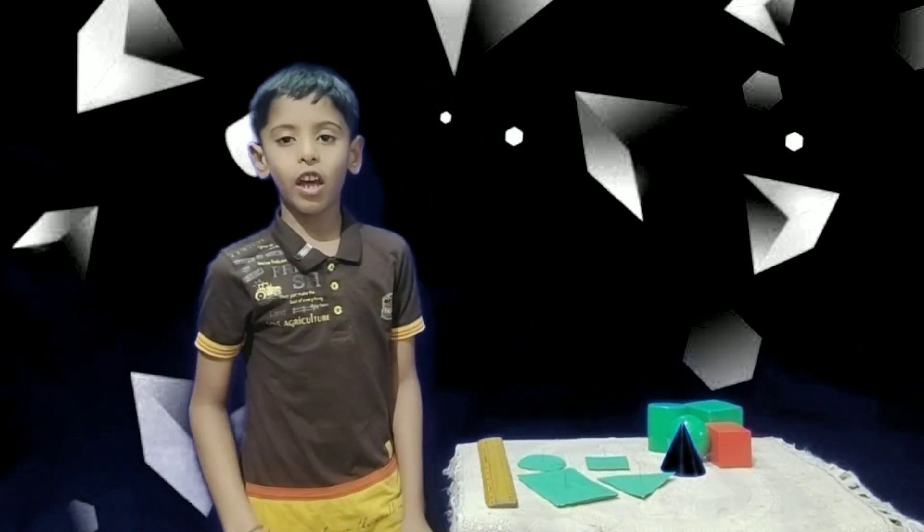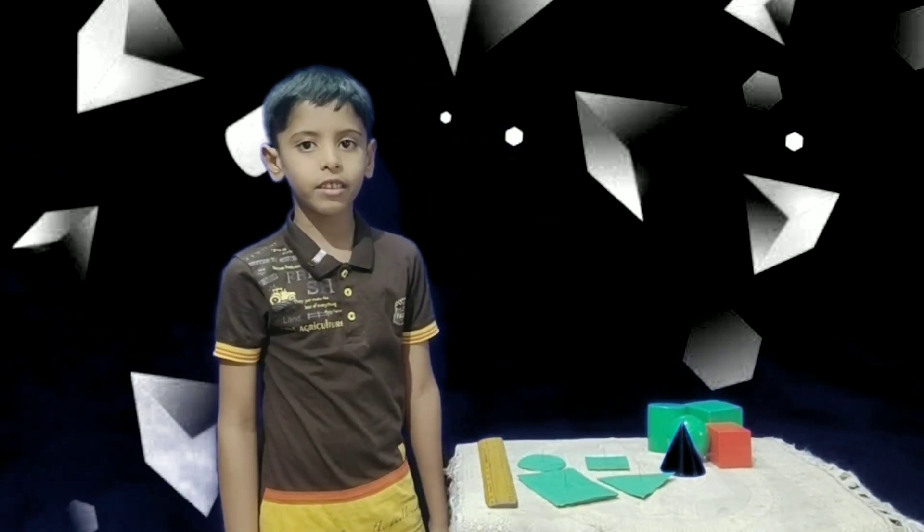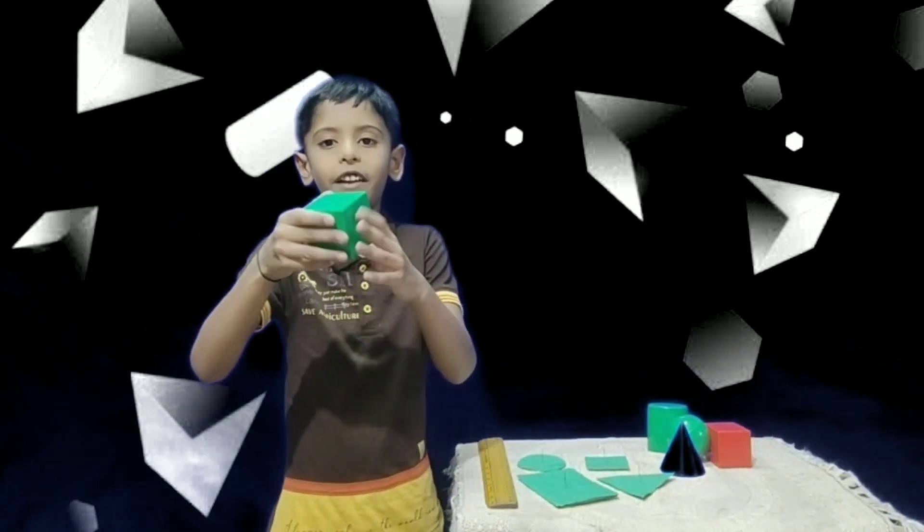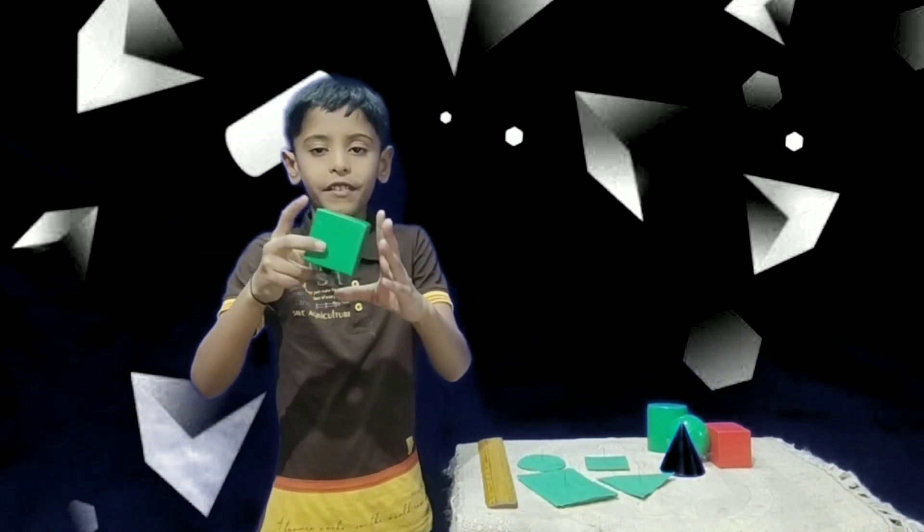The side of a solid shape is called face. This is cube. It has six flat faces. All the faces are same.